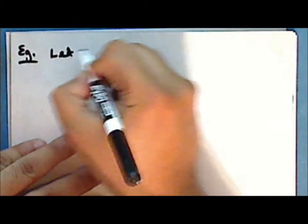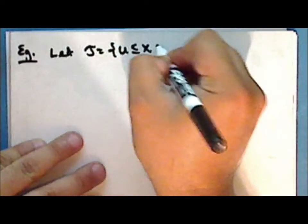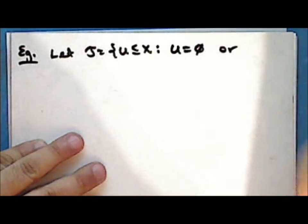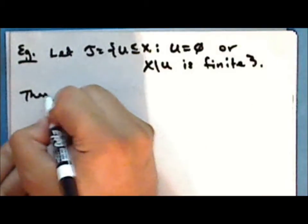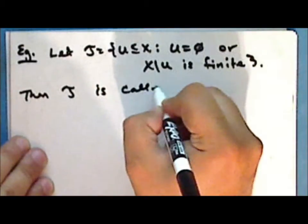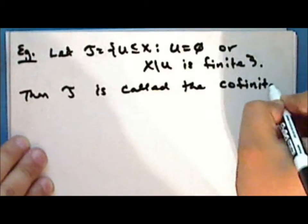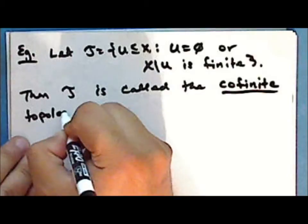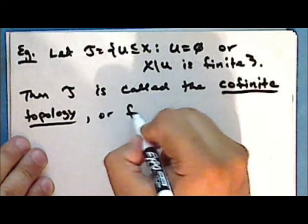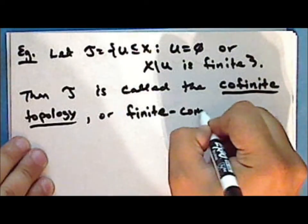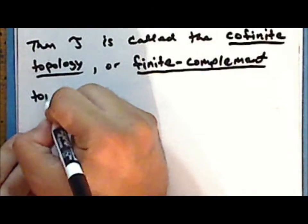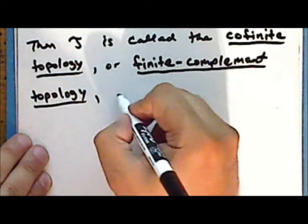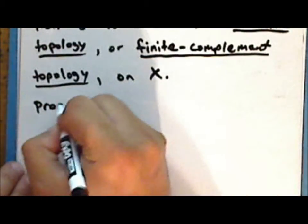We'll look at the second exercise from the previous lecture. Let τ be the collection of all subsets of a given set X where that subset is either the empty set or the complement of that subset is finite. This collection τ is called the co-finite topology, or the finite complement topology, on the set X. We will prove that this collection is a topology.